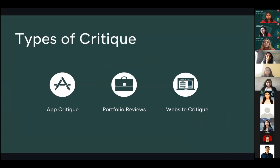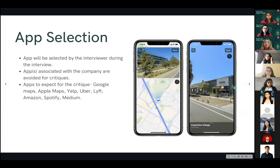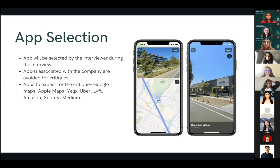A portfolio review covers going over your current work. A website critique talks about the functionality and appearance of a website. Today we'll focus on app critique because it's a really important part of the current application and interview season. For app critiques, you need to choose an app — the app will actually be selected by the interviewer during the interview. Apps associated with the company will be avoided. Apps to expect include Google Maps, Apple Maps, Yelp, Uber, Lyft, Amazon, Spotify, and Medium. Regarding device selection, Android, iOS, and Windows have different operating systems, so let the recruiters know beforehand which you'll use.